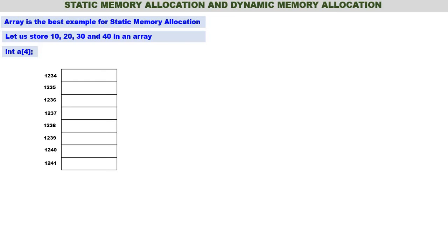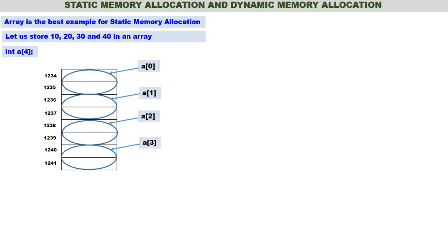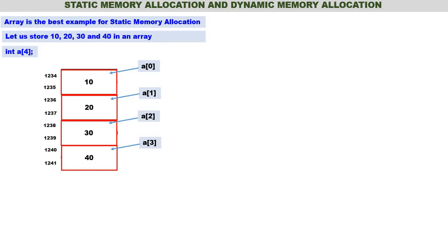The operating system randomly allocates memory. Here, eight memory locations are allocated for 'a': two for a[0], two for a[1], two for a[2], and two for a[3]. All eight memory locations allocated for array 'a' are continuous. Now let us store the values: 10 at ef0, 20 at ef1, 30 at ef2, 40 at ef3.